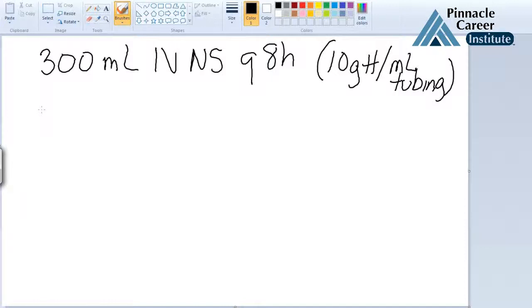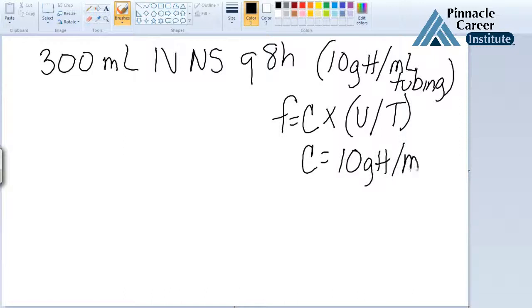You're going to use your formula of F, which is your flow rate, equals C—that's your calibration tubing—times the quantity of your volume divided by time. So let's define these. Our C is 10 gtt per mL. Our volume is 300 milliliters. And our time is every 8 hours, but we need to convert that to minutes. So 8 hours times 60 minutes would be 480 minutes.